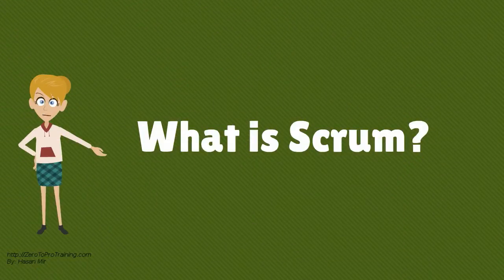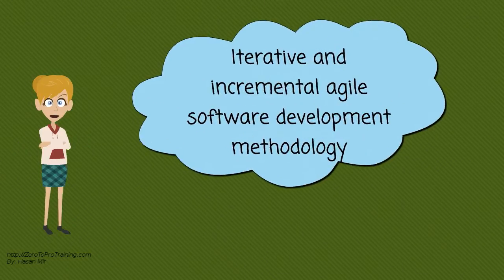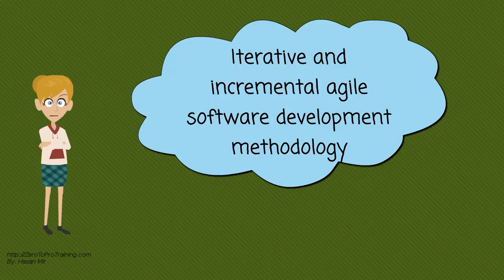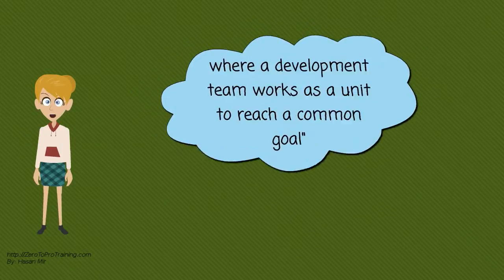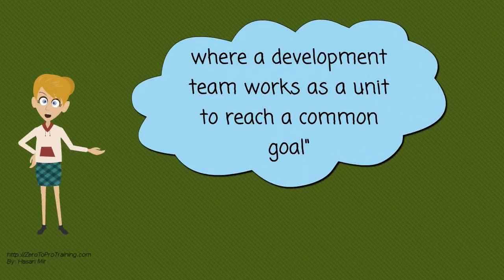In this video we will talk about what is Scrum. Scrum is an iterative and incremental agile software development methodology for managing product development. It is a flexible, holistic product development strategy where a development team works as a unit to reach a common goal.